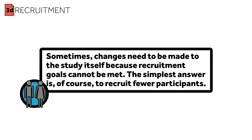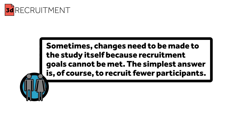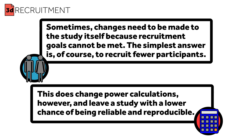Sometimes changes need to be made to the study itself because recruitment goals can't be met. The simplest answer is, of course, to recruit fewer participants. This does change power calculations, however, and leaves a study with a lower chance of being reliable and reproducible.